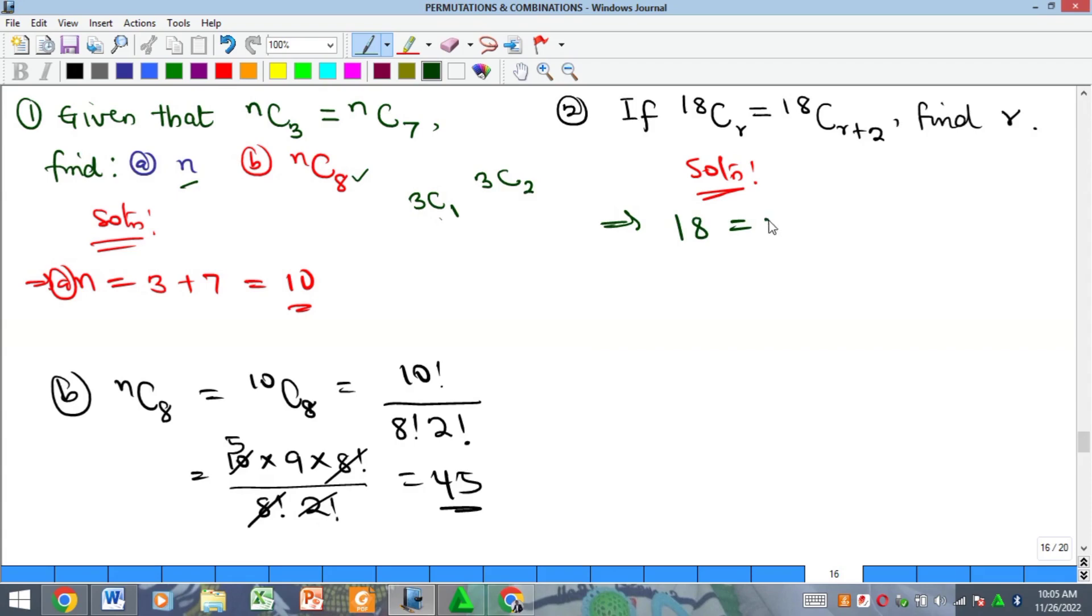The r here is r and the r here is r+2. And then if I try to solve this I'll have 18 is equal to 2r plus 2. And of course my 2 coming here will give me 18 minus 2 which is 16 equal to 2r. Therefore my r alone (divide both sides by 2) is going to give me r as equal to 8.